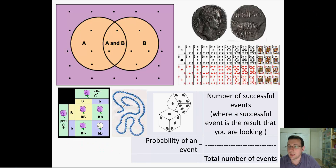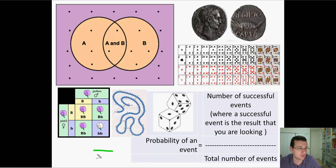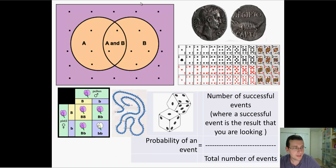Probability can also be used in biology in other ways. For example, with amino acids in a protein — there are 20 amino acids that can possibly be part of a protein, so for each position in the protein, the chance of that being the right amino acid is one out of 20.